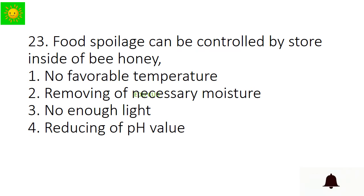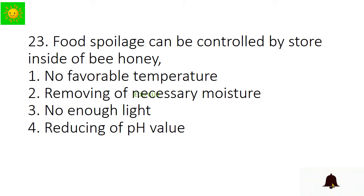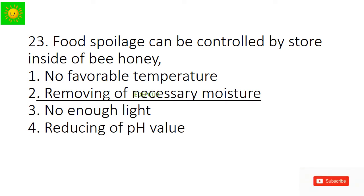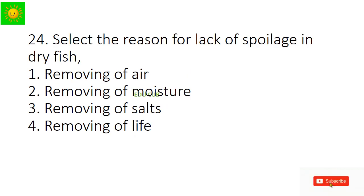Question 22: Food spoilage can be controlled by — options: no favorable temperature, removing of necessary moisture, no enough light, or reducing of pH value. The answer is removing of necessary moisture.